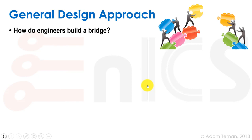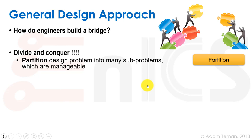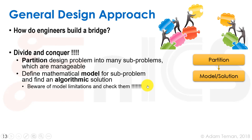Now we'll go to the second part: building a chip. The general design approach for any engineering problem — like building a bridge — is divide and conquer. You partition the design into many sub-problems, each manageable, often hierarchically so each sub-design is further partitioned until one engineer or team can carry it out. We start by partitioning the design, and this partitioning often happens hierarchically.